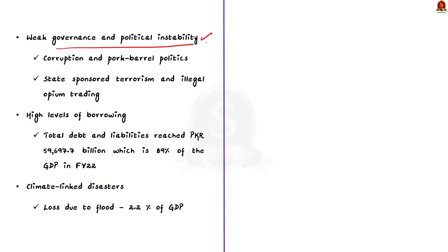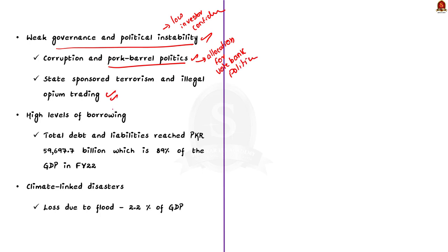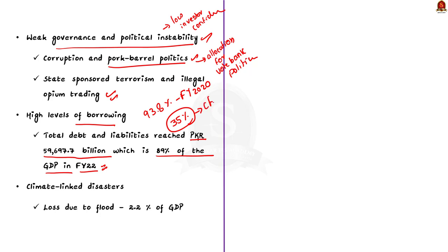Fourthly, weak governance and political instability have been significant factors in weakening investor confidence. This also contributed to corruption and pork barrel politics — the allocation of public funds and resources to targeted electors for political purposes — that undermine the country's fiscal position. There are also allegations of state-sponsored terrorism and illegal opium trading, which undermine the credibility of the country. The total debt and liabilities reached 59,000 billion Pakistani rupees, which is 89% of GDP in financial year 2020, and peaked at 93.8%. Of the total outstanding bilateral debt owed by Pakistan, China alone accounts for about 35%, meaning Pakistan has fallen into China's debt trap diplomacy.